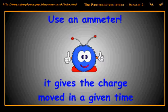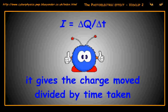Then, from your datasheet, you know that current is the total charge moved divided by the time it took to move.